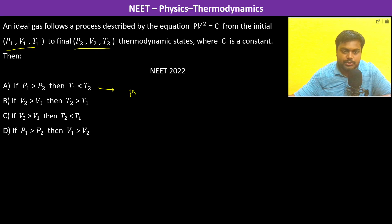PV square is equal to constant. That means V can be written as nRT by P. This is a square and this is a square, so this is going to be constant. That means T square by P is going to be constant.